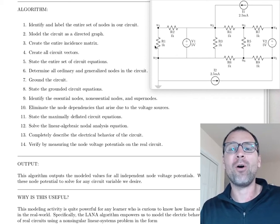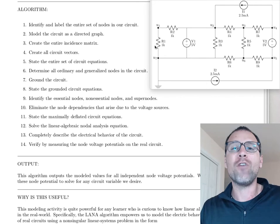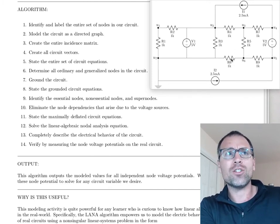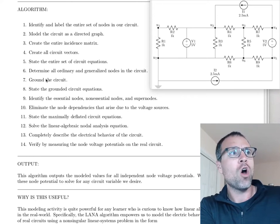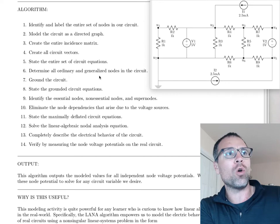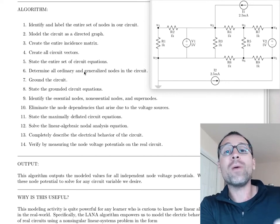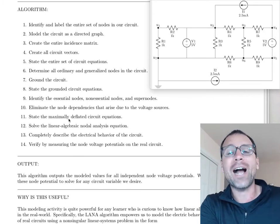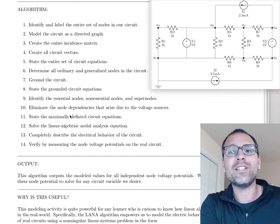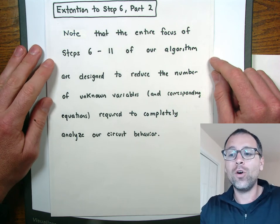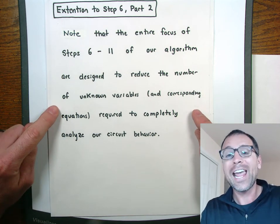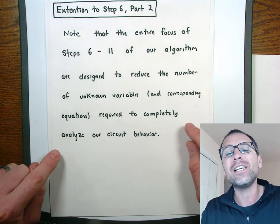Welcome back to the second part of our extended conversations focusing on step six of the LANA algorithm. We are working on example two which has 12 circuit elements: two voltage sources, two current sources, and eight resistors. We just finished step six, which was to determine all ordinary and generalized nodes. The entire focus of steps six through eleven is designed to reduce the number of unknown variables and equations required to completely analyze our circuit.